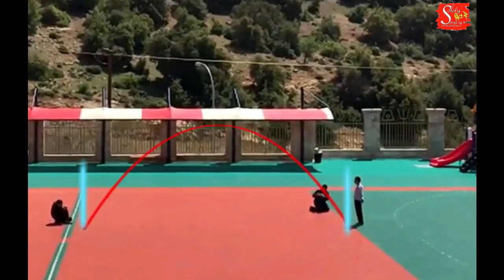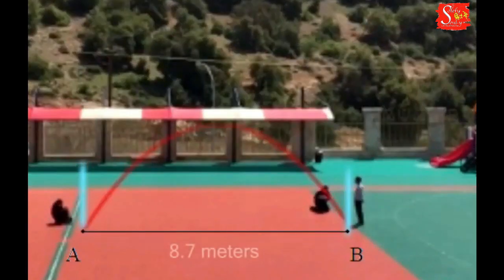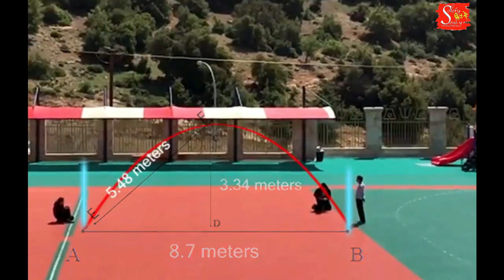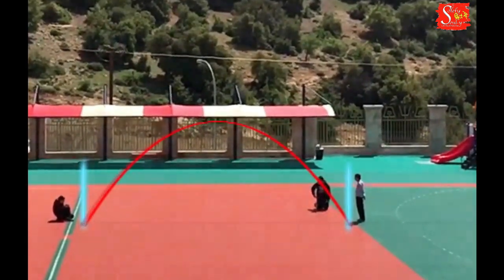It goes up, moves down in a beautiful parabolic shape, and covers horizontally 8.7 meters and vertically 3.34 meters. Now if the trajectory is traced, it is a beautiful parabolic curve.